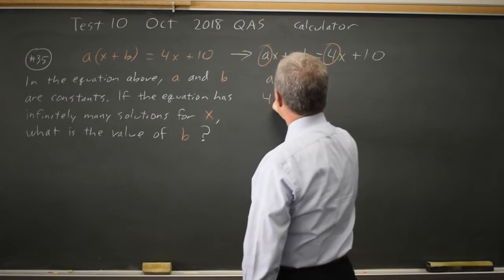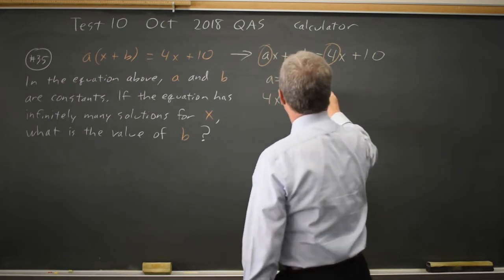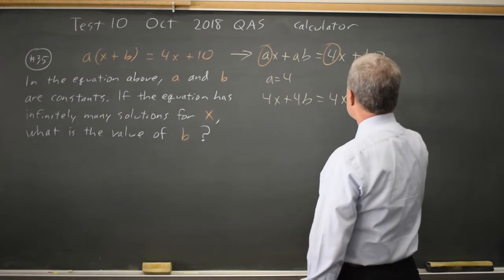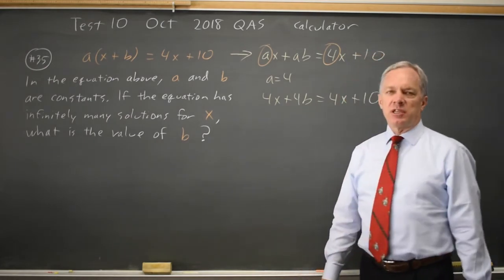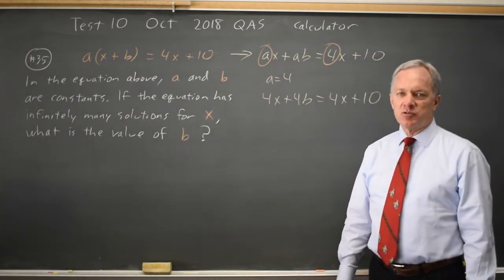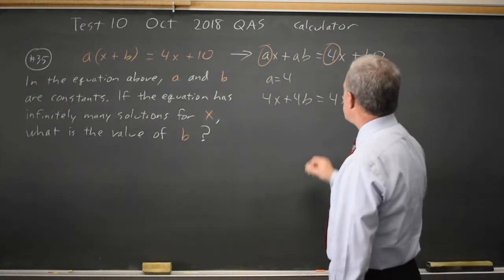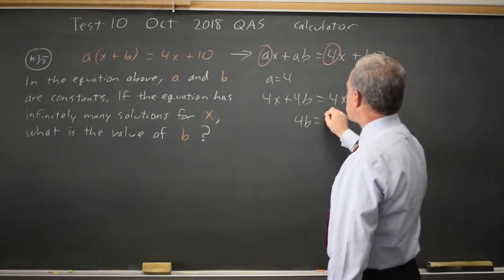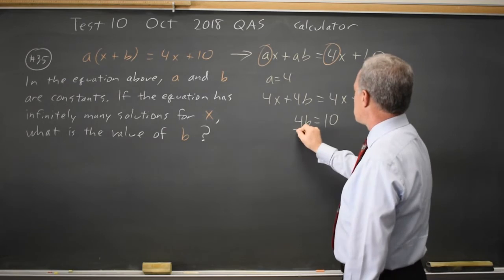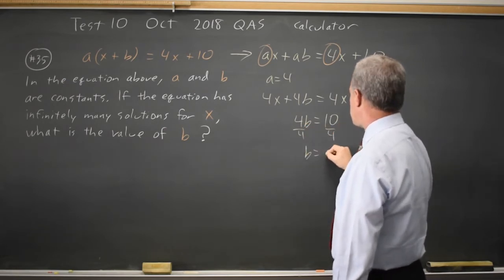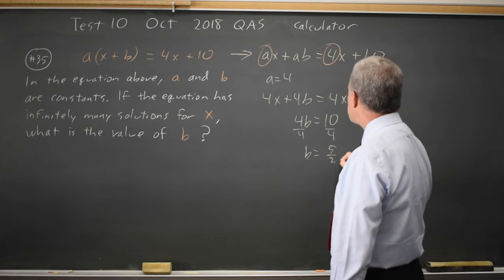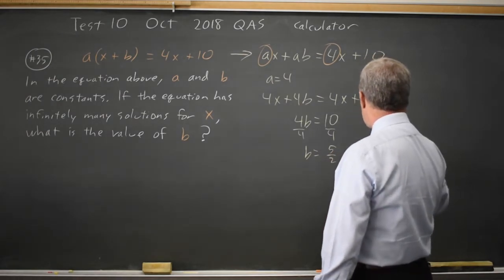So this is 4x plus 4b equals 4x plus 10. If there's infinitely many solutions, this is true for all x, which means 4b equals 10. Same intercept. b equals 10 over 4, which is 5 over 2, or 2.5.